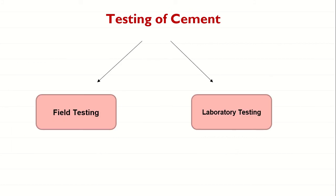Coming to the testing of cement — to determine all those physical properties you have to test the cement. Testing of cement can be done in two ways: field testing and laboratory testing. Both are used to ensure the quality of the cement.